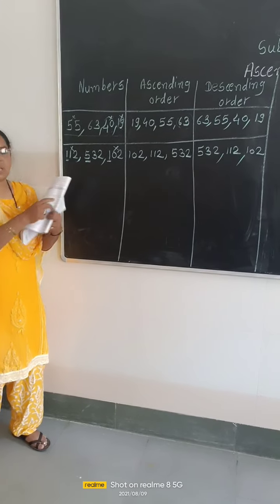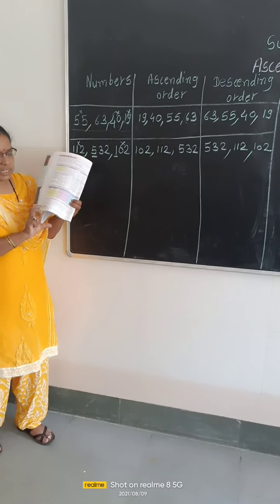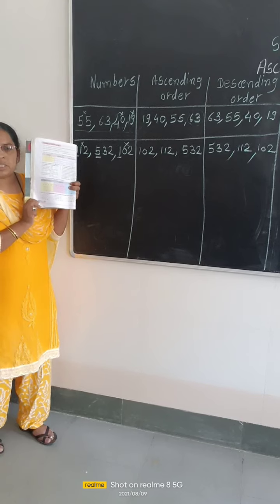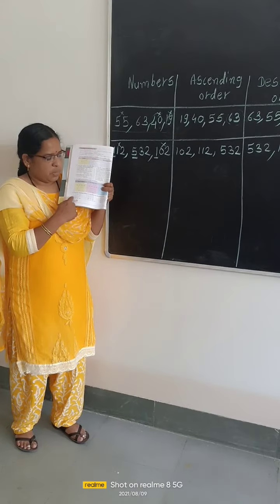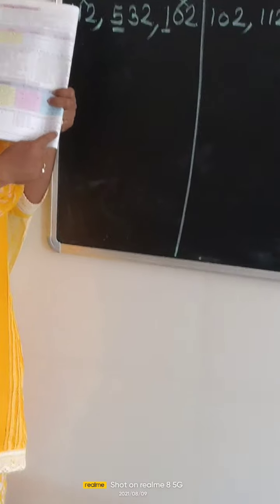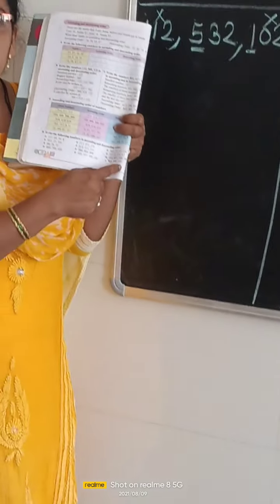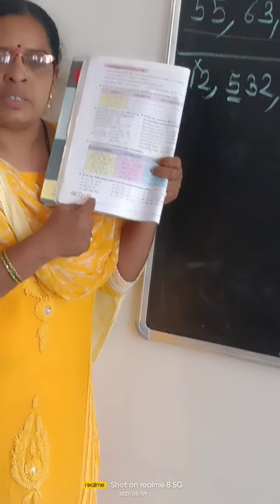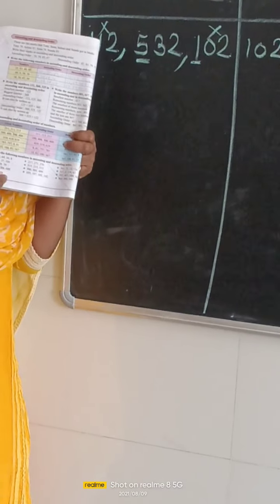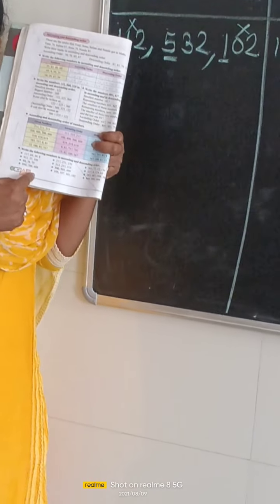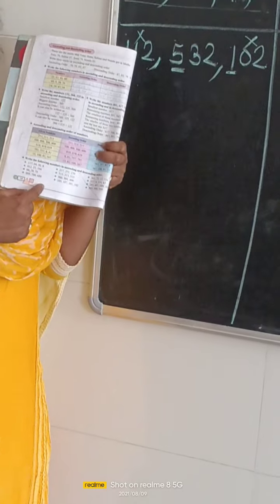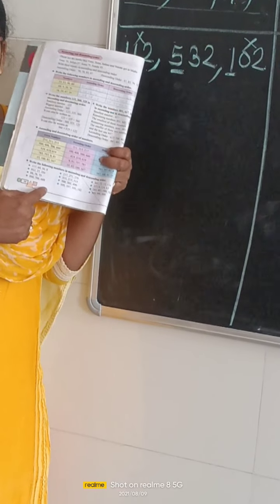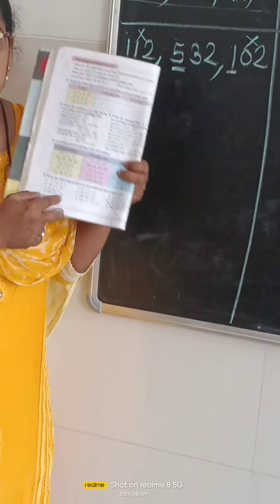In this way, you can arrange all the given numbers in ascending and descending order. Now, examples are given on page number 40. Today, all of you arrange these numbers in ascending and descending order and send me a photo. Try to solve it. Okay students, thank you.